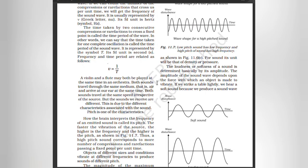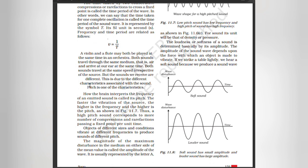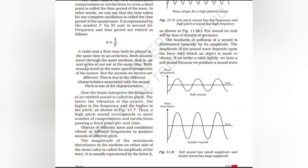A violin and a flute may both be played at the same time in an orchestra. Both sounds travel through the same medium — air — and arrive at our ear at the same time. Both sounds travel at the same speed irrespective of the source, but the sounds we receive are different. It is due to the different characteristics associated with the sound. Pitch is one such characteristic. How the brain interprets the frequency of an emitted sound is called the pitch. The faster the vibration of the source, the higher is the frequency and the higher is the pitch. A high-pitch sound corresponds to more compressions and rarefactions passing a fixed point per unit time. Objects of different size and conditions vibrate at different frequencies to produce sounds of different pitch.